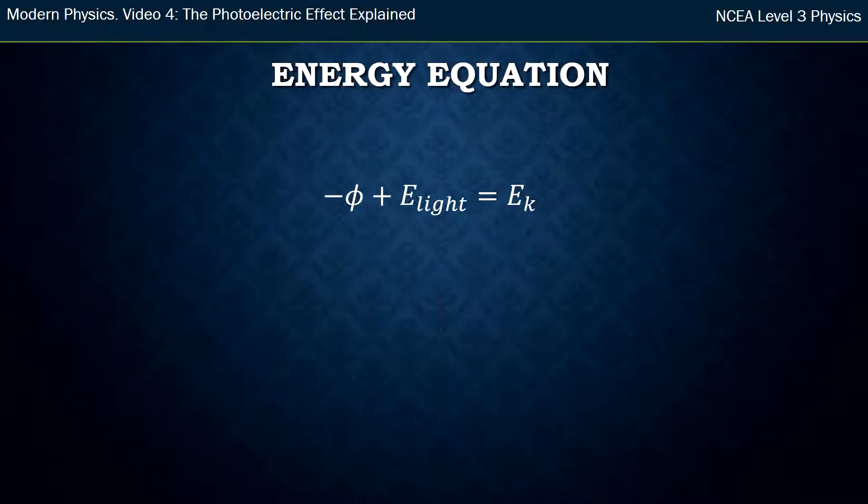So we had our energy equation in the first video on this, and we had this negative work function. That's like the energy well that the electron has to escape from, and to be able to escape from that, it needs to get energy from the light. If it has enough energy, then it leaves with some kinetic energy. And the change that Einstein made to that is he said, well, the light's energy is given by hf. And so this is the final photoelectric effect equation.